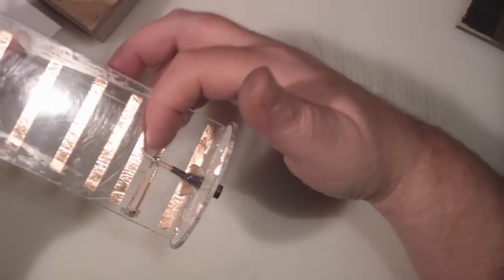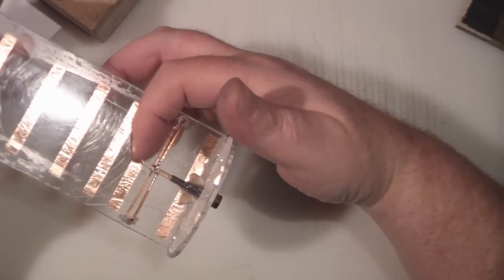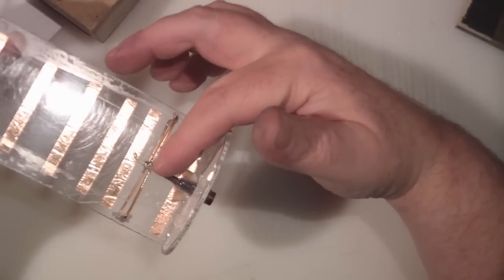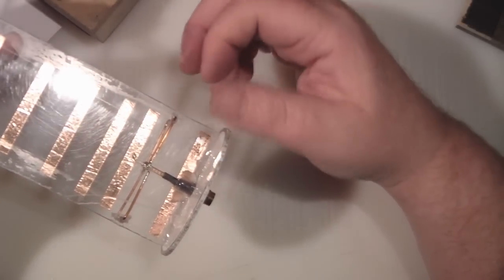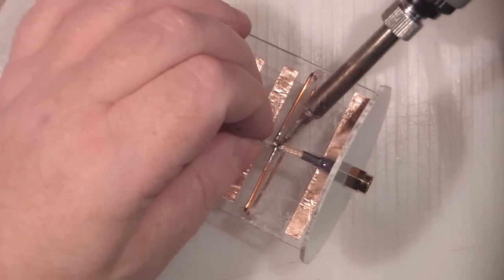So what we're going to do now is I've already pre-tinned the ends of the element up here and the coaxial cable and I'm going to solder the cable onto the ends of this element now. So I'm going to solder the shield on first.